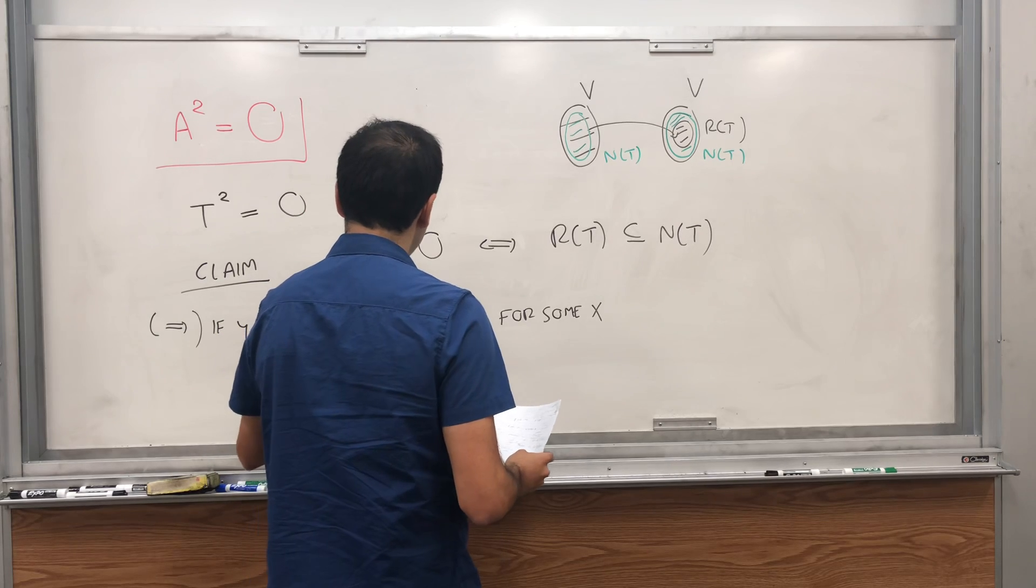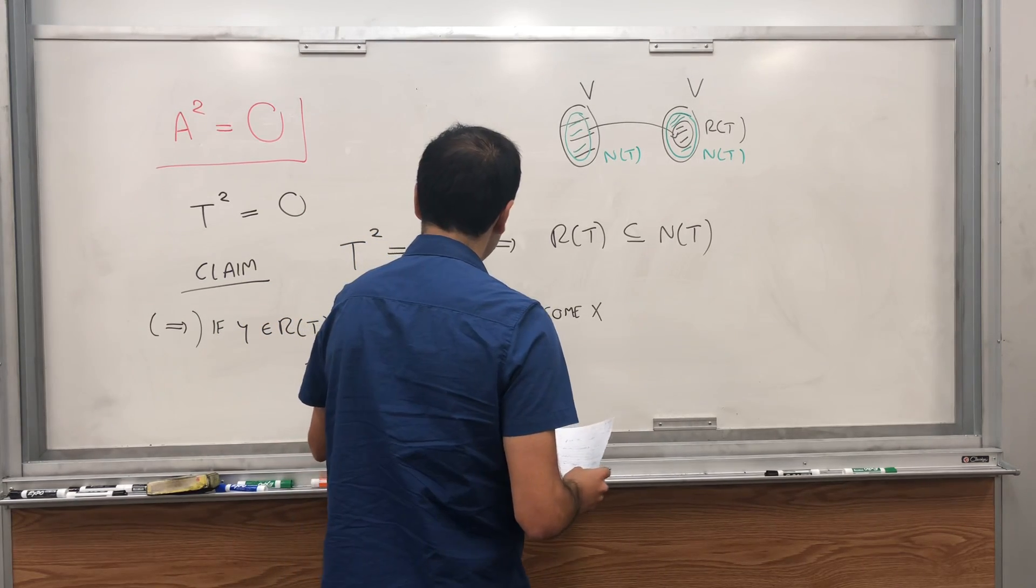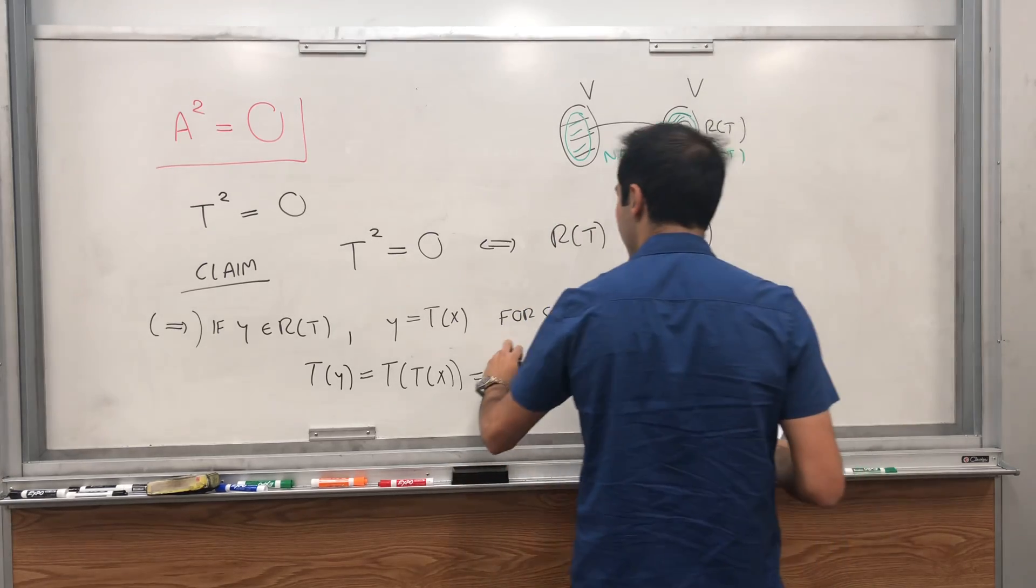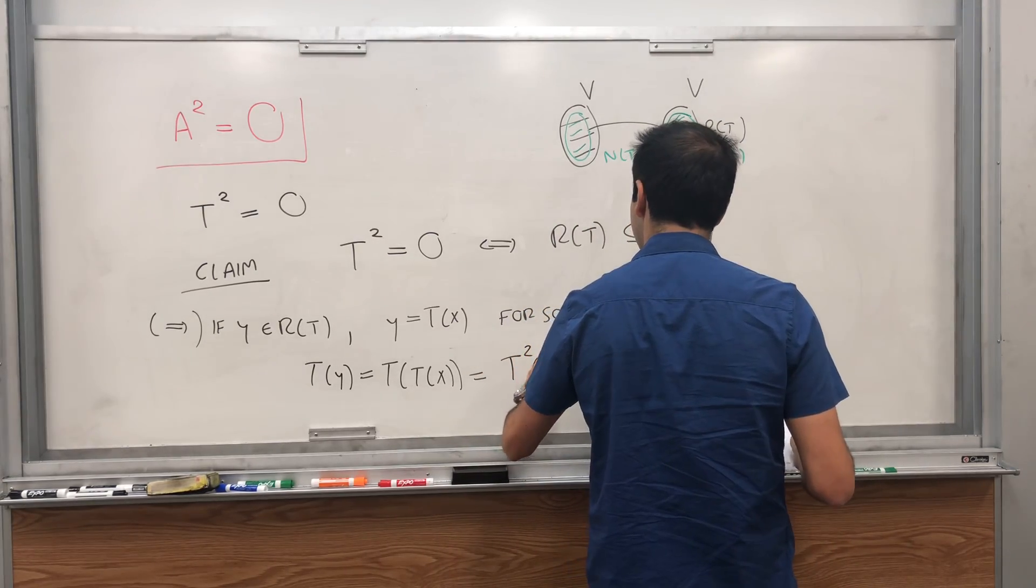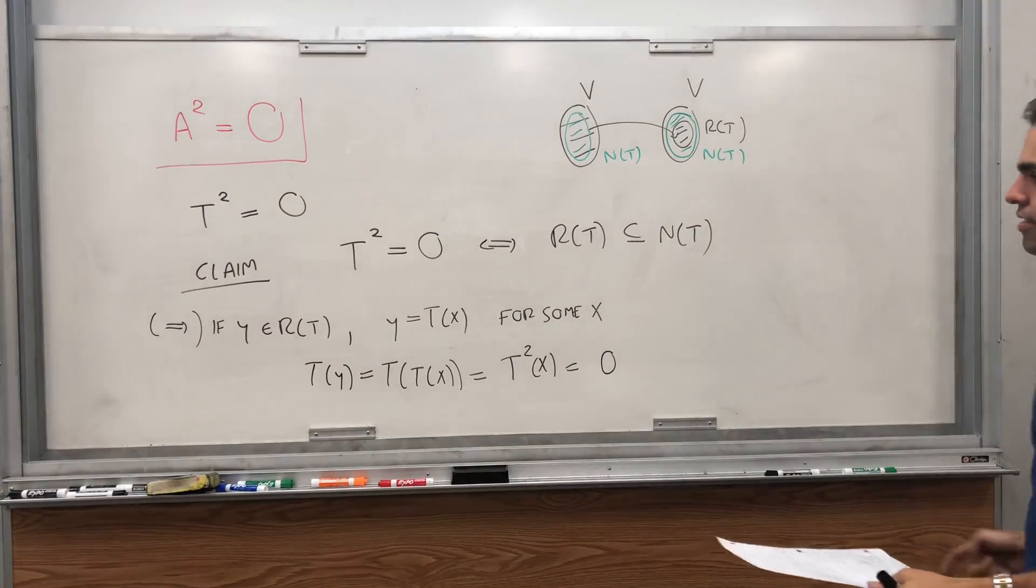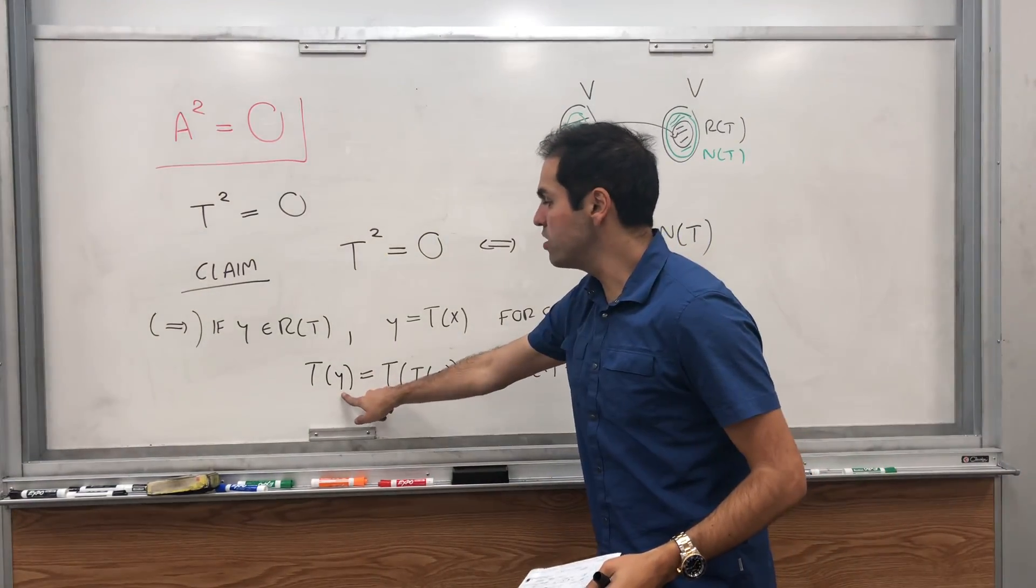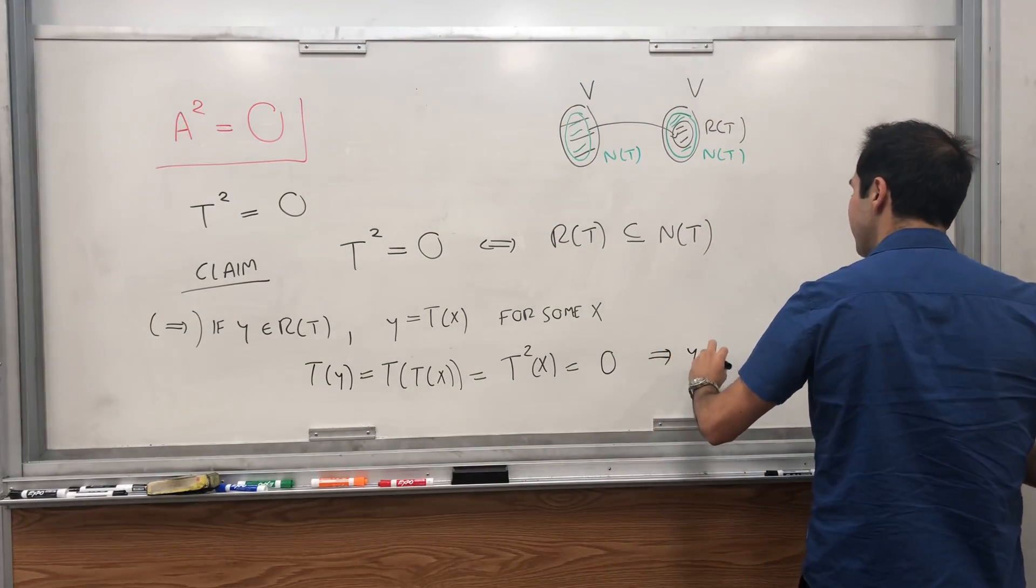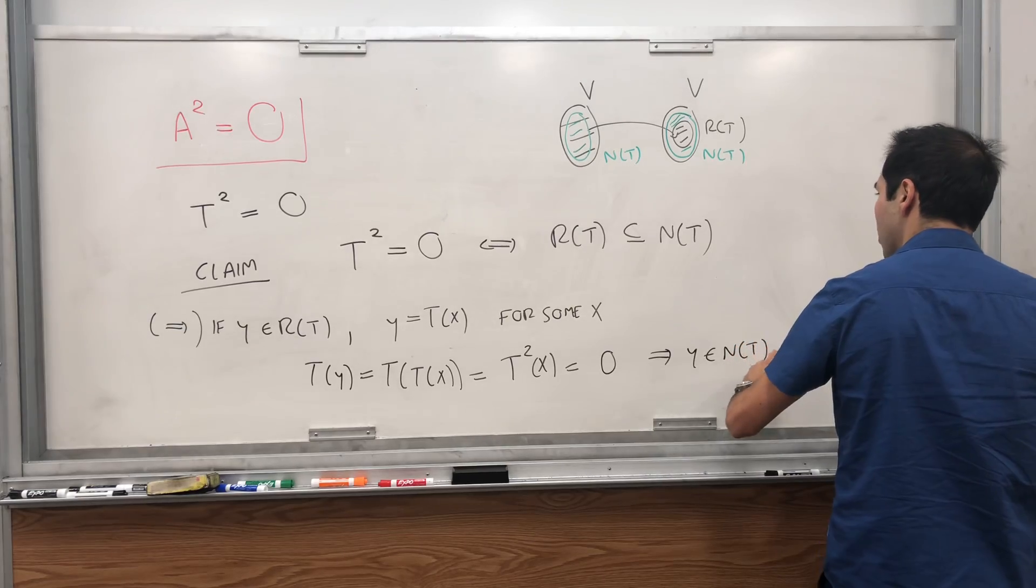Okay, but then let's calculate T of Y. Well, T of Y is T of T of X. But we know that T squared is zero. So this is T squared of X, and that's basically zero times X, which is zero. So what does T do to this arbitrary element? It sends it to zero. And so by definition,